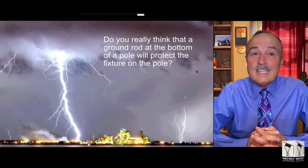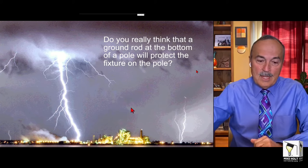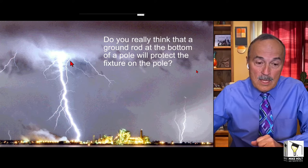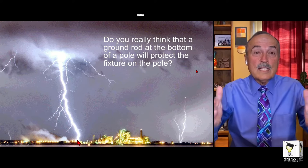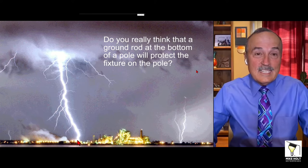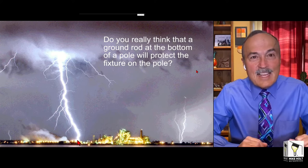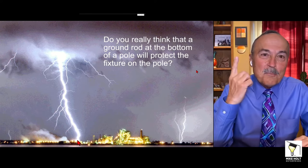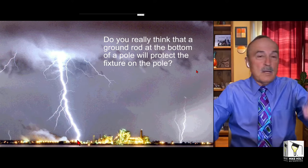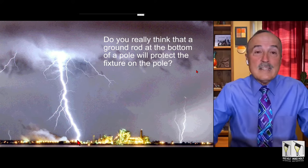Back to the question: does the ground rod at a pole serve something? Imagine a light pole with a light fixture on top. A lightning bolt comes down - you saw what it does to a tree, cuts it in half. Do you really think a ground rod at the bottom of a pole is going to protect that little LED fixture on top? People were driving ground rods because they thought that's what made it safe from electricity because it was 'grounded.' Grounding doesn't make anything safe.